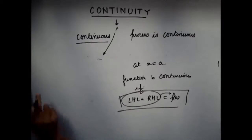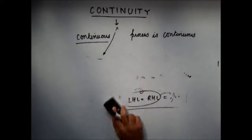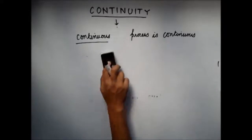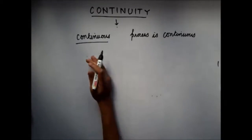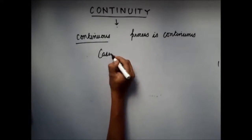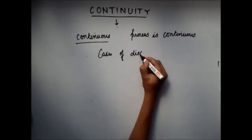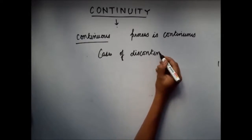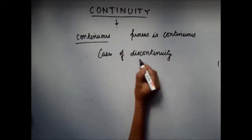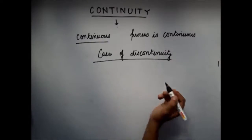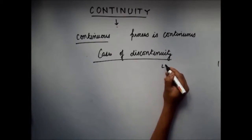Since you know the condition for continuity of a function at a particular point x equals to a, now tell me: what are the cases for which a function can be discontinuous? Let's go by the definition to find the answer.